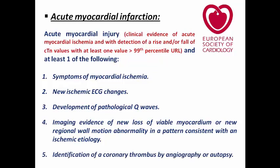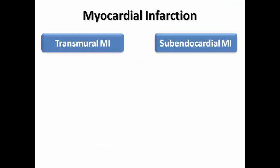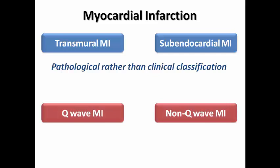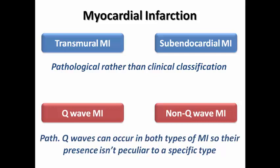Myocardial infarction was previously classified into transmural versus subendocardial MI, but this is a pathological rather than a clinical classification. It was also classified into Q-wave versus non-Q-wave MI, but the problem is that pathological Q waves can occur in both types, so their presence was not specific to one type. That is why both of these classification systems were omitted.